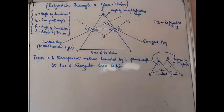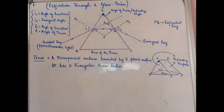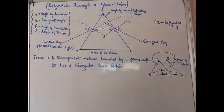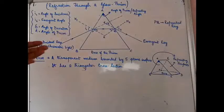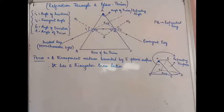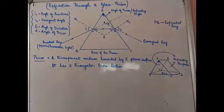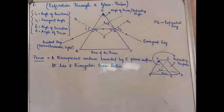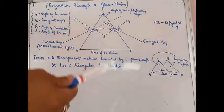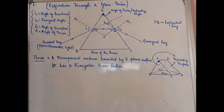Welcome back students to another lecture on refraction of light at plane surfaces. The next plane surface we are going to deal with is a prism — specifically, a refracting site of a prism. Let us first understand what we mean by the word prism and how it looks. We will first read the definition of prism.